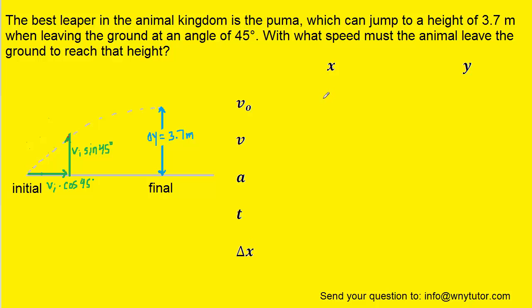We'll begin with the x direction and fill in as much information as we can. We know from the diagram that the initial velocity in the x direction is represented as vi cosine 45, so we can fill that in.